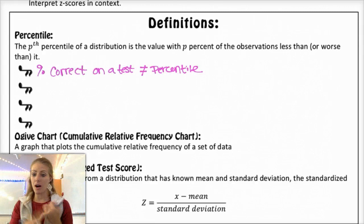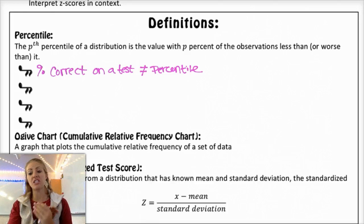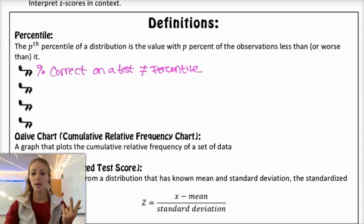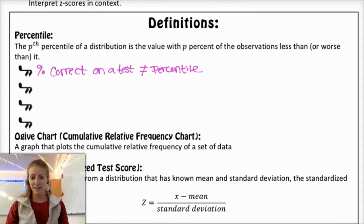A couple common questions or misconceptions: one, the percent correct on a test does not equal your percentile. Number two is that percentiles should be whole numbers. So you would not say I was in the 97.5th percentile. You would give a whole number, the 95th percentile or the 96th percentile, whatever is appropriate for that particular case.